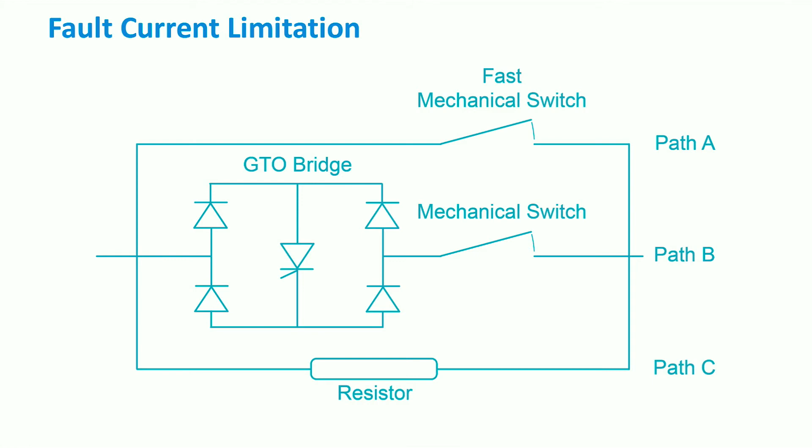In the figure, we can see a fault current limiter that is operated through three different paths: A, B and C. During normal operation, the mechanical switch is closed.